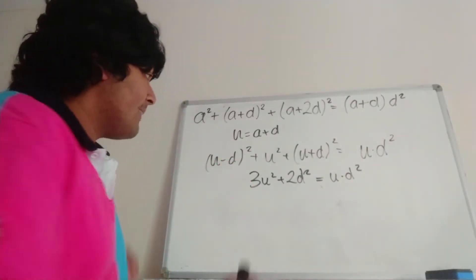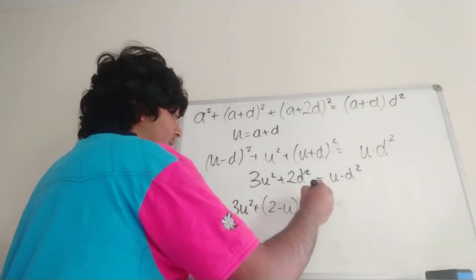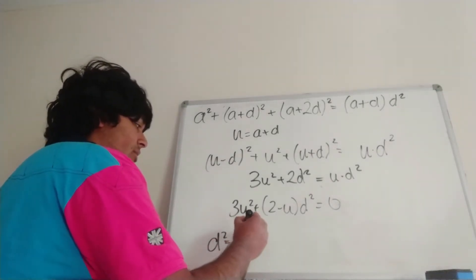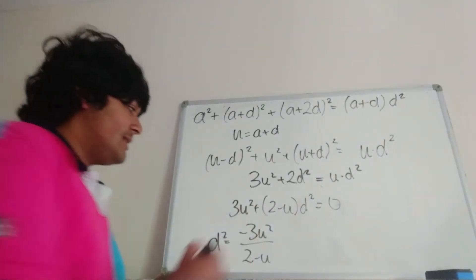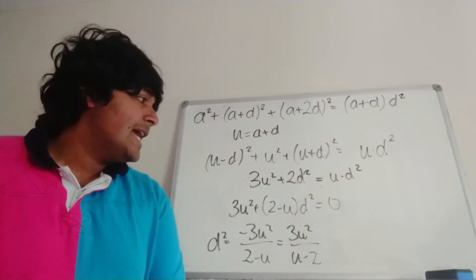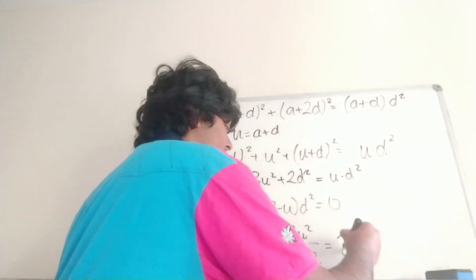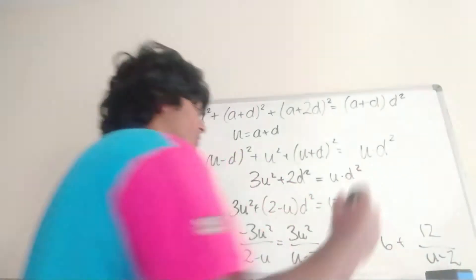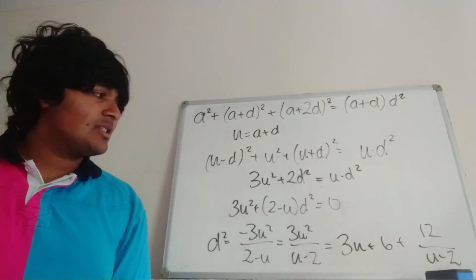Bringing everything onto one side, I get 3u squared plus (2 minus u) times d squared equals 0. Rearranging, d squared equals minus 3u squared all over (2 minus u). Multiplying top and bottom by minus 1, that's 3u squared over (u minus 2). If you long divide this, it's equal to 3u plus 6 plus 12 over (u minus 2). So d squared equals 3u plus 6 plus 12 over (u minus 2).